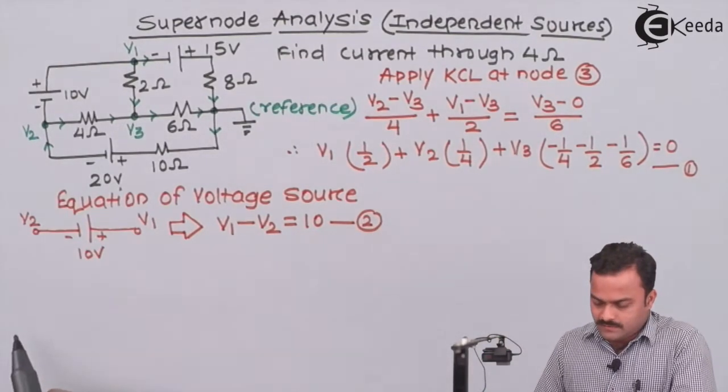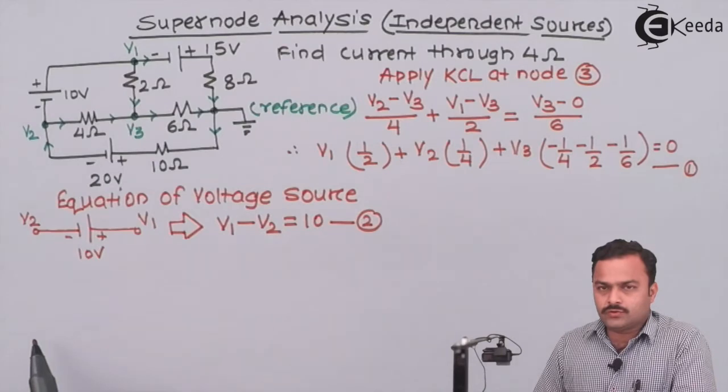We have to get one more equation, which we can obtain by applying KCL to the supernode, which is a combination of node 1 and node 2.